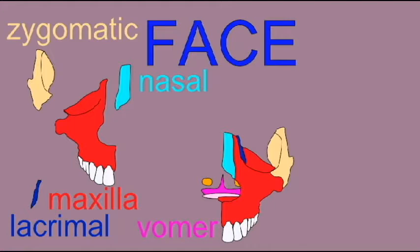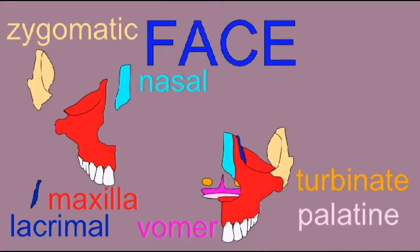The turbinate, which is a small independent bone which helps to cause turbulence in incoming air as we breathe. And the palatine bone, which along with the maxilla, helps to form the hard palate which separates the nasal and oral cavities.